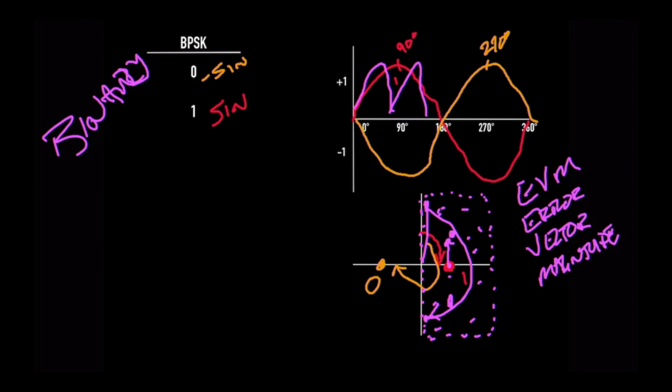The problem with BPSK is it only allows us to have one single bit, one bit per cycle. If I want to go faster, what do I do?